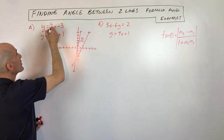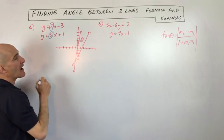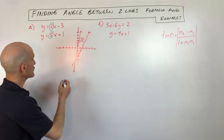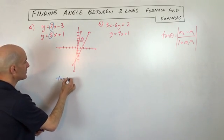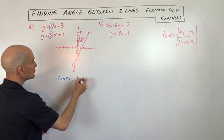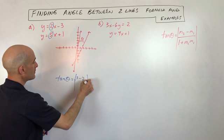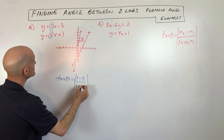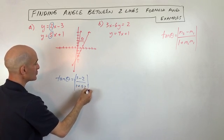So you can see that the slopes are 2 and 5. So that's what we're going to be using in our formula there. So we've got tangent of theta equals 5 minus 2, over 1 plus 5 times 2.